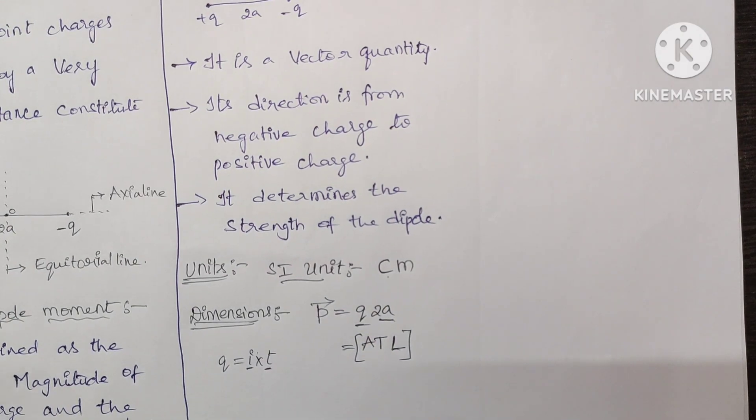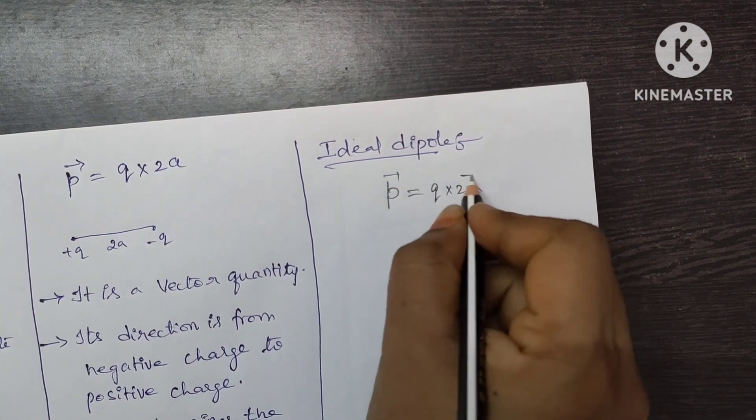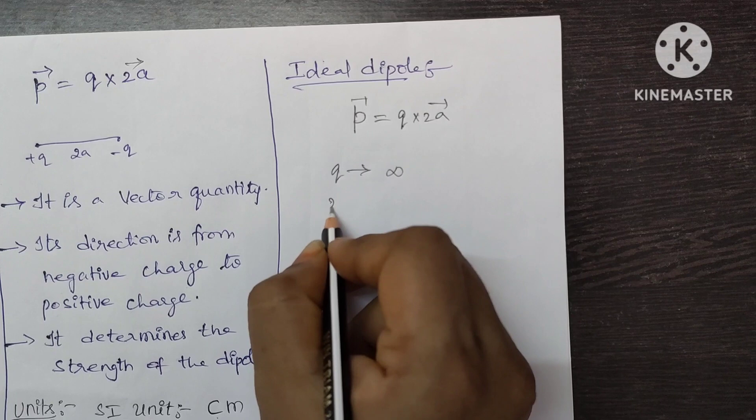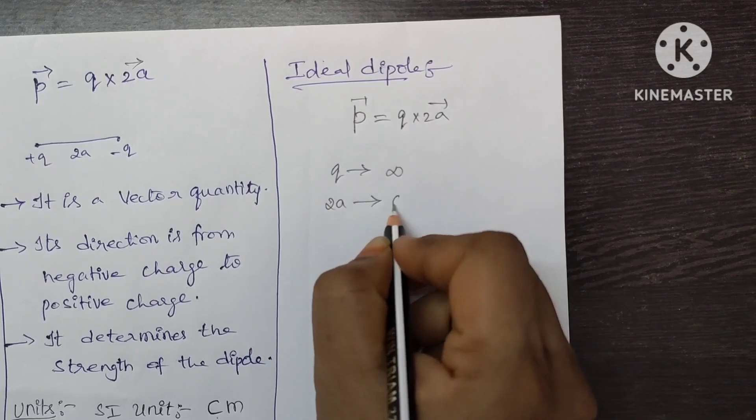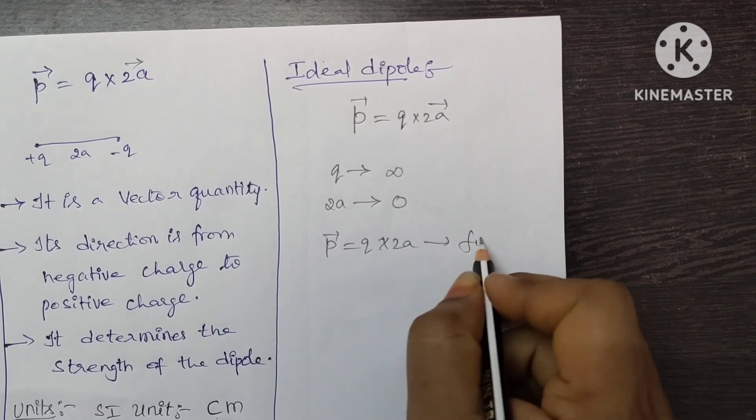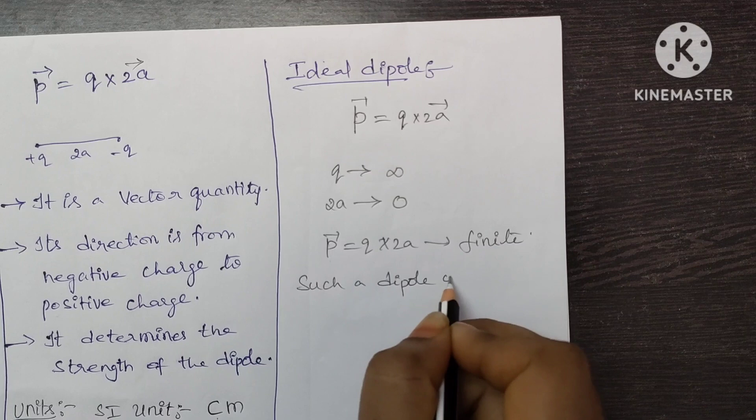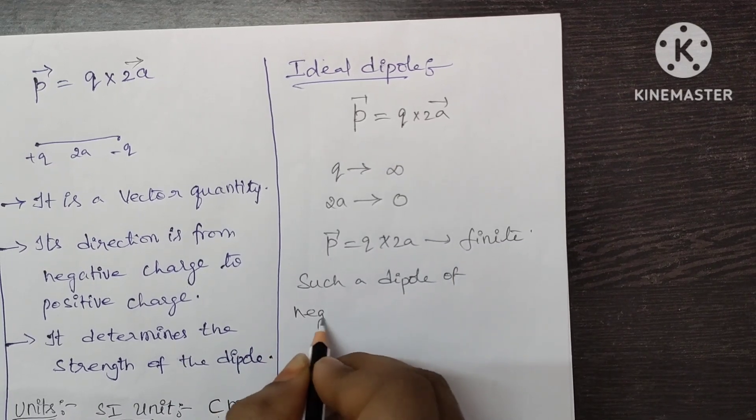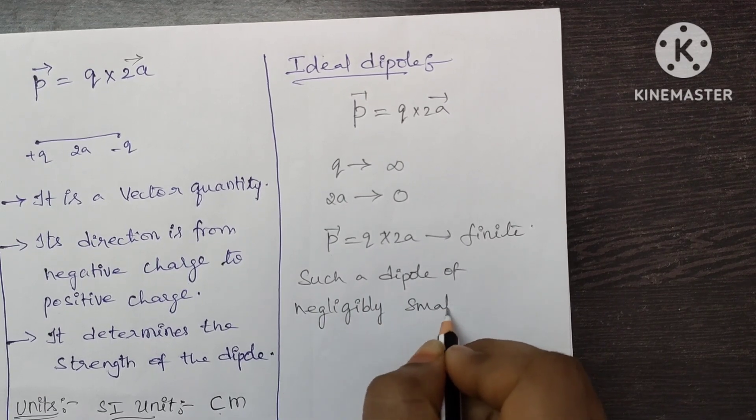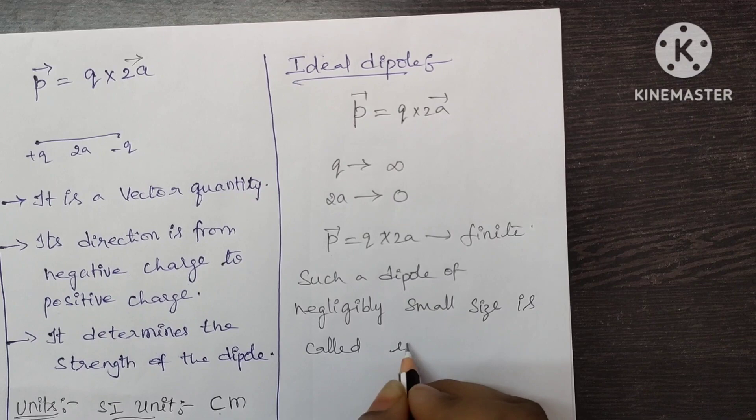Next, let us see about ideal dipole. We know that P is equal to Q into 2A. When Q approaches to infinite and its length approaches to zero, then P is equal to Q into 2A is finite. Such a dipole of negligibly small size is called ideal dipole.